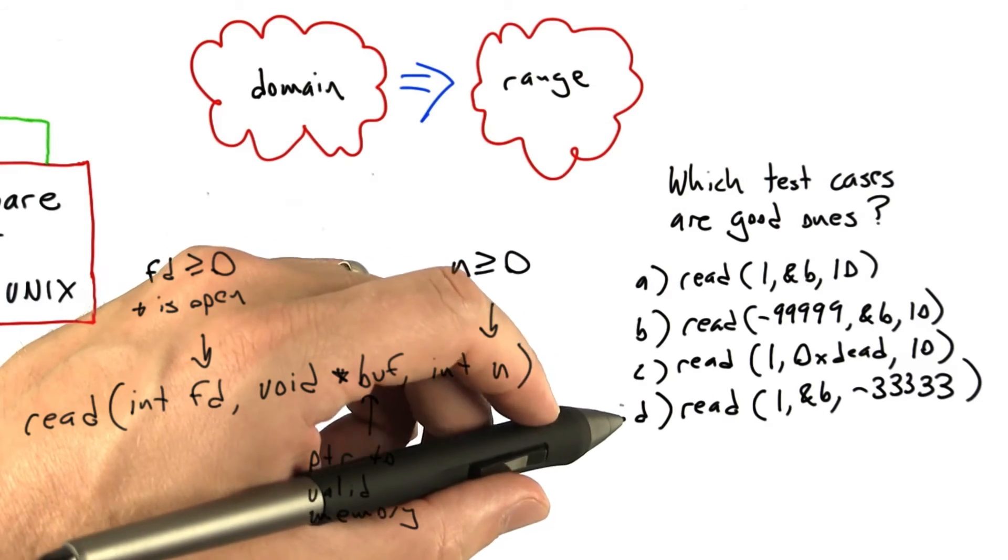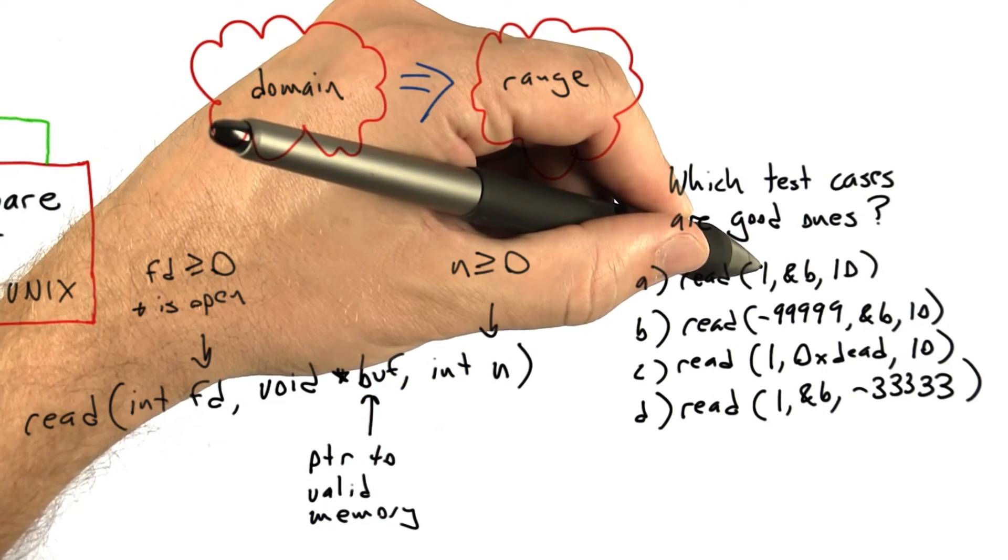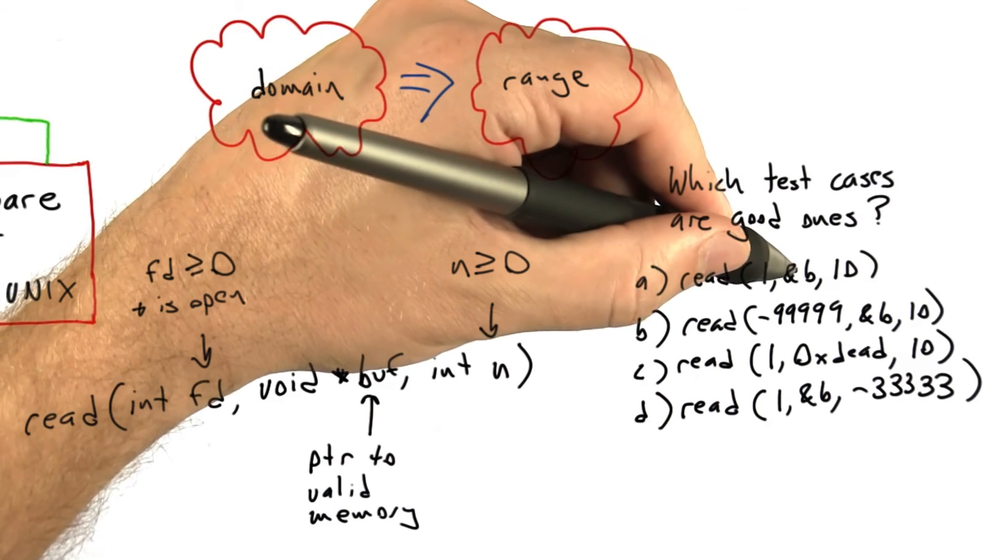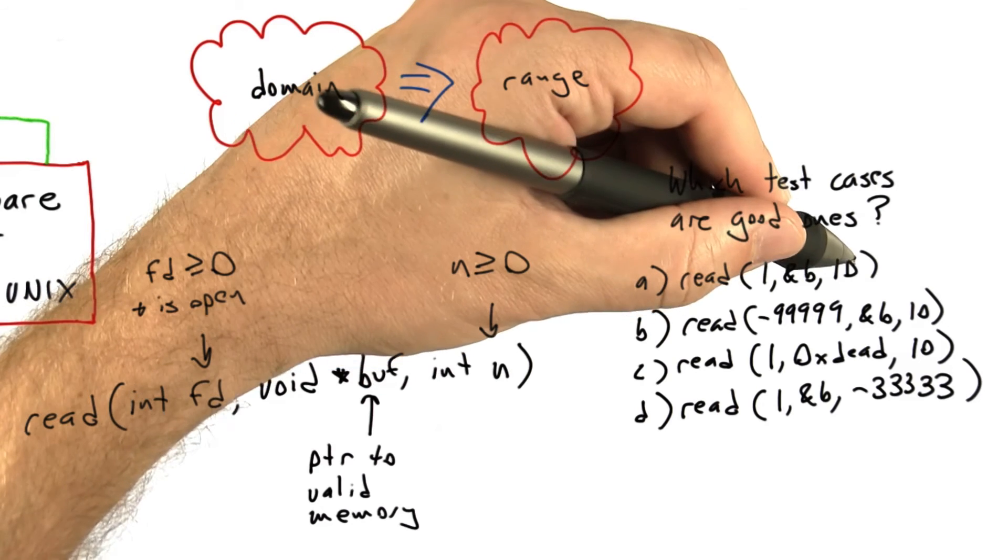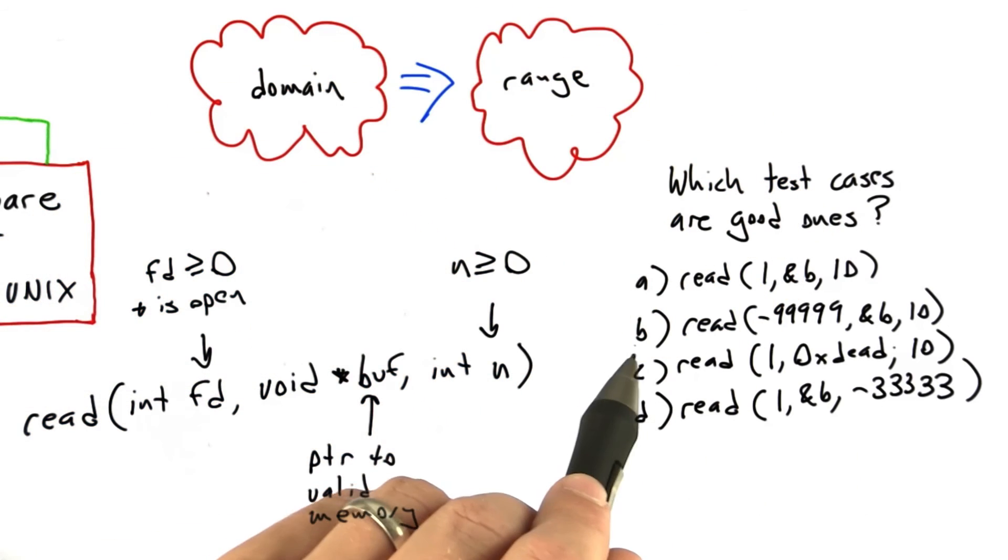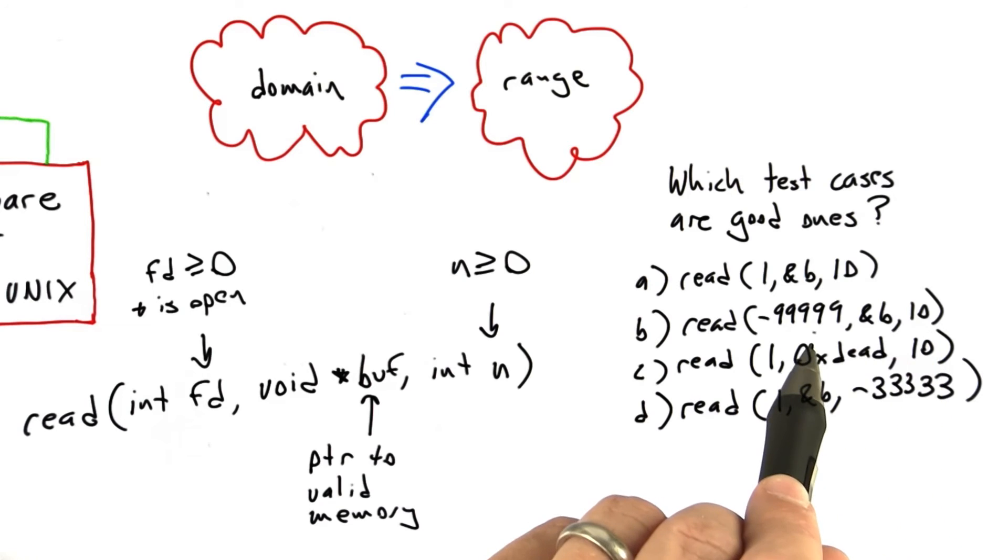So our four test cases are: first, reading from file descriptor number one. This is always a valid file descriptor for Unix process. From the address of b, and let's assume that refers to a valid memory region, and we're going to read 10 bytes. The second test case is also reading into variable b, 10 bytes, but it's specifying file descriptor negative 99999.